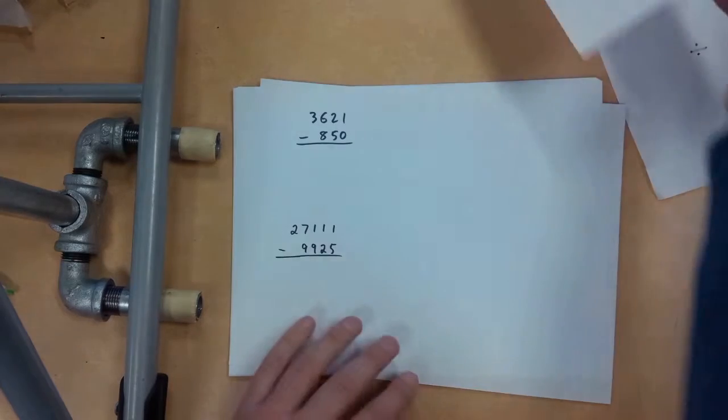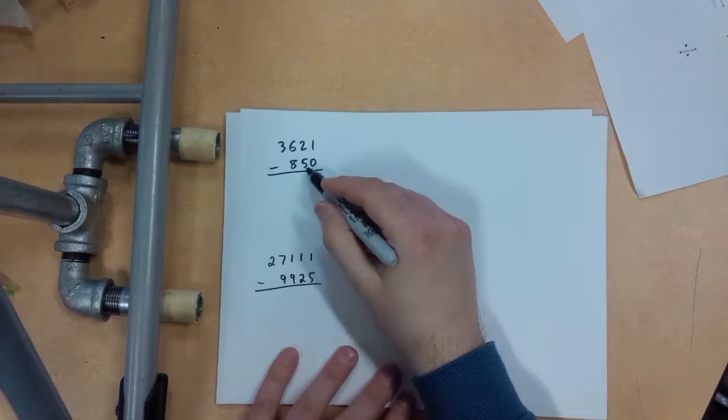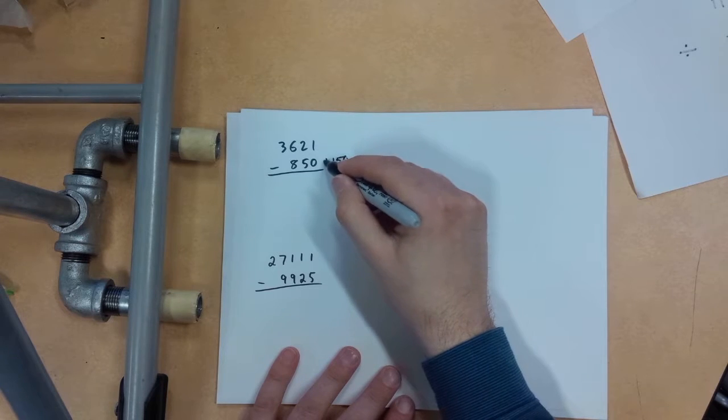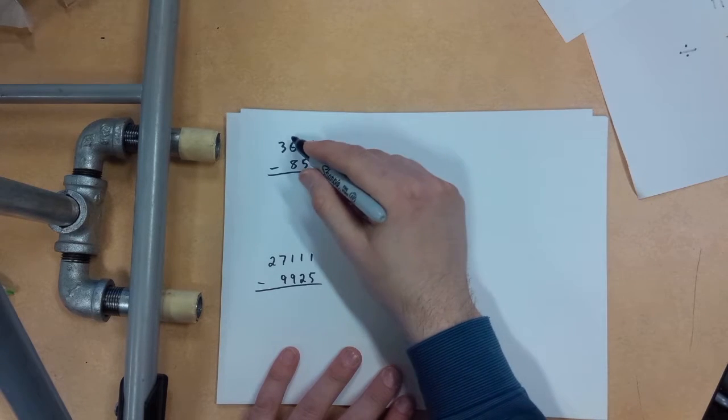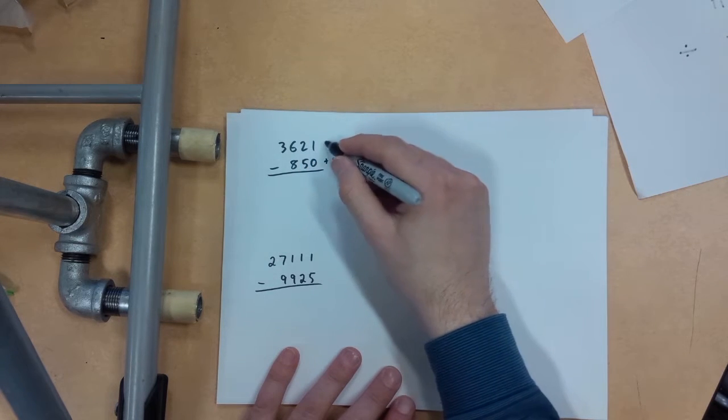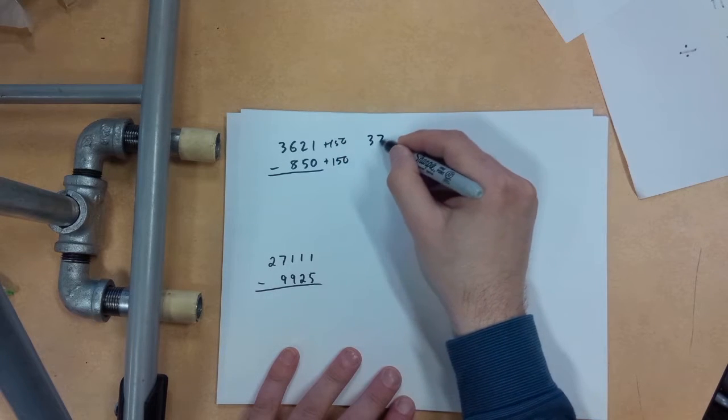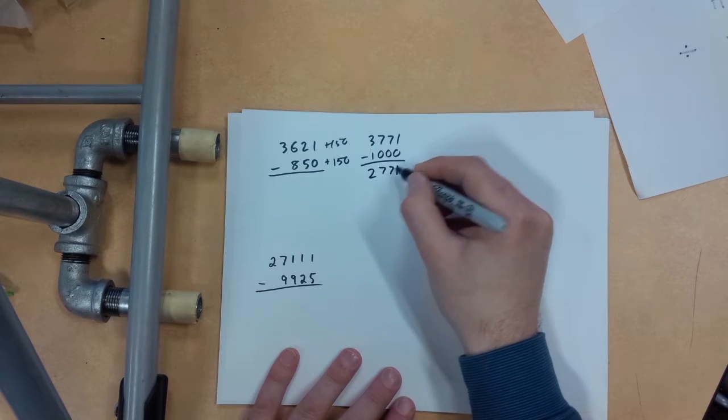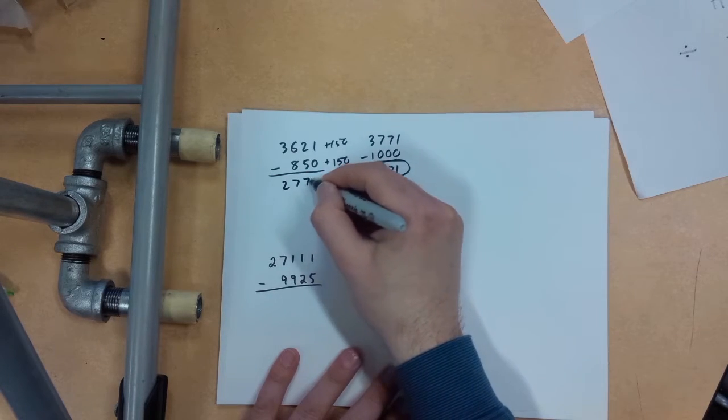Let's try a couple more examples here. What easy number can I go from here? Well, if I add 150, I'll get 1,000. So I'll add 150, that'll be 771. So I'll have 3771 minus 1,000. Piece of cake. 2771. There we go, 2771.